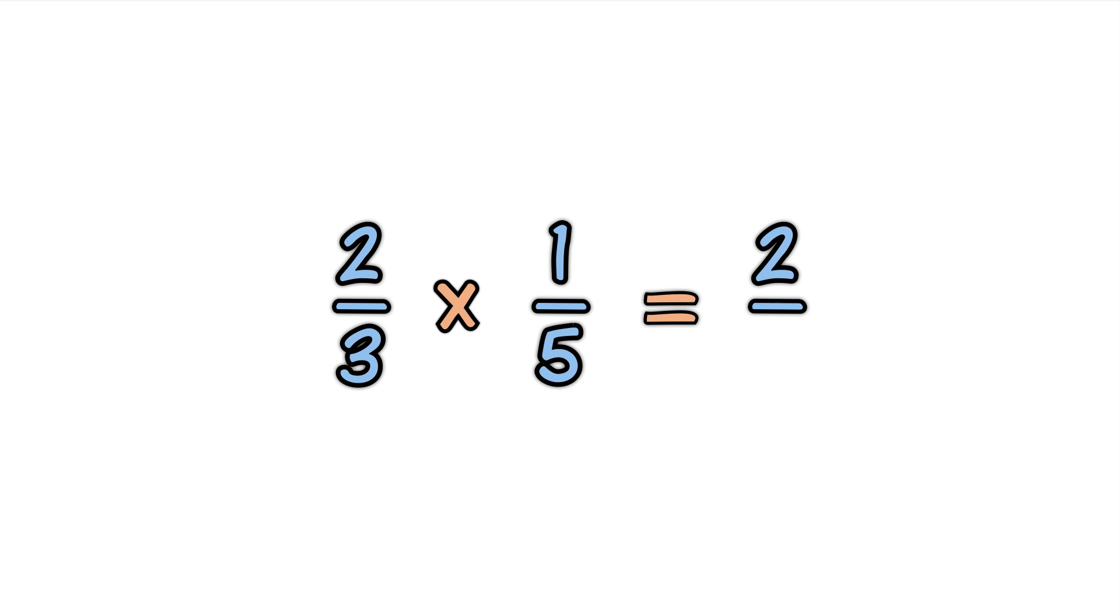Example. Two-thirds divided by five. Make five into five over one. Turn the second fraction upside down. Five over one becomes one-fifth. Multiply. The result is two-fifteenths.